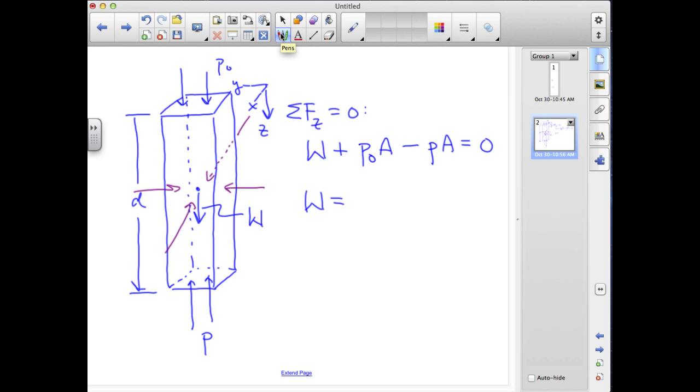Now the weight will be the specific weight of the fluid times its volume. The specific weight is the mass density rho, which we're taking as constant, times g times the volume of fluid, which is the cross-sectional area of the column times d. And so you can see that we've got a common cross-sectional area that's going to cancel out there. And if we move the pressure over to the right-hand side, the pressure as a function of depth is equal to the reference pressure at the top plus rho gd.